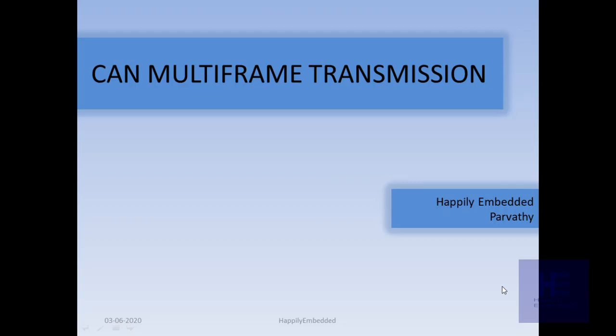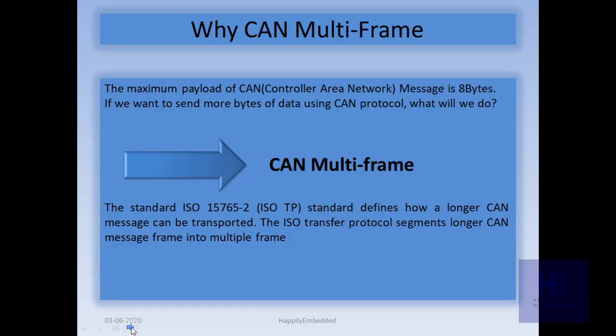Today's topic is CAN Multiframe Transmission. Why do we need CAN Multiframe? All of us know that the maximum payload of a CAN message is 8 bytes. But if we want to send more than 8 bytes of data, then we go for CAN Multiframe Transmission.